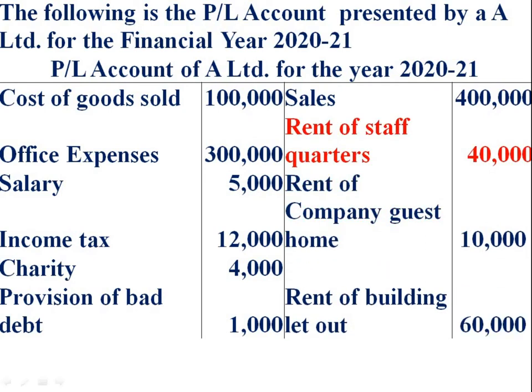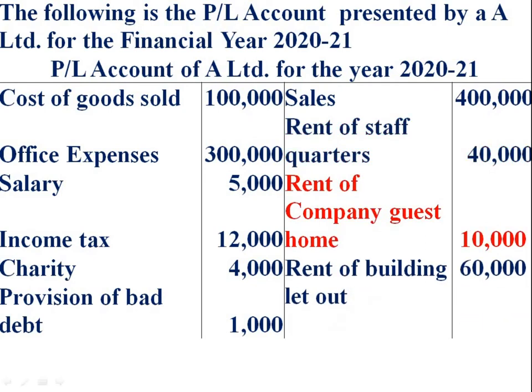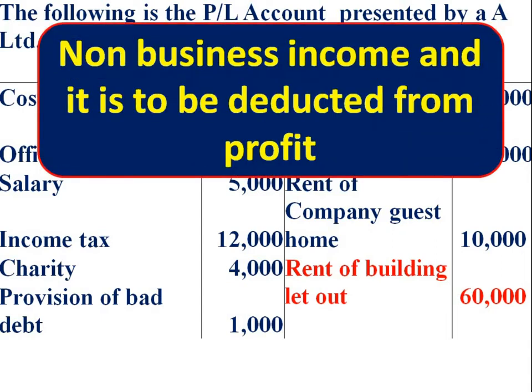Therefore there is no need of adjustment for those items. Then rent of building let out — it is income from house property, not a business income. Therefore, it is to be cancelled by deducting from net profit.